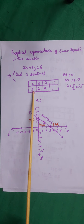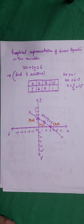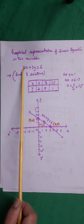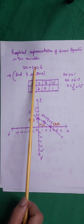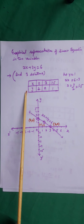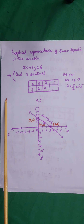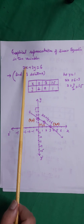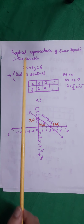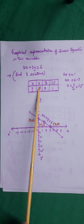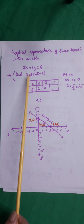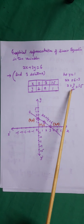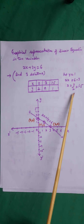Assume values of y and calculate x. Put y equal to 2: 3y gives 6, so 2x equals 6 minus 6, meaning x equals 0. Put y equal to 0: 2x equals 6, so x equals 3. Put y equal to 1: 2x equals 6 minus 3, so x equals 3/2 equals 1.5.